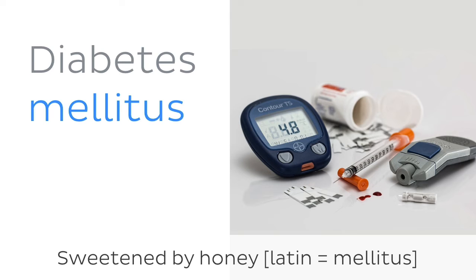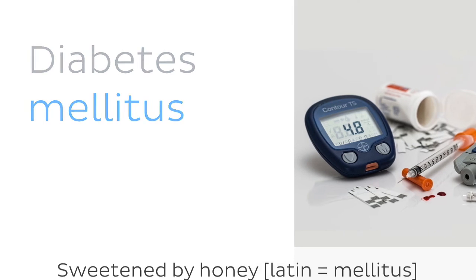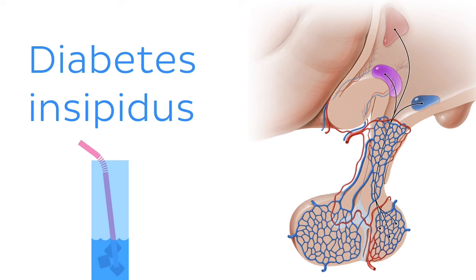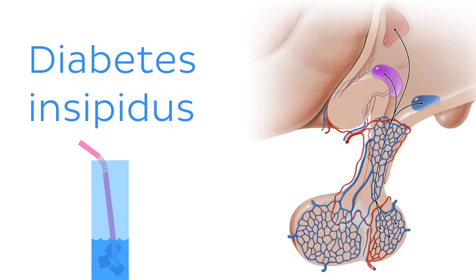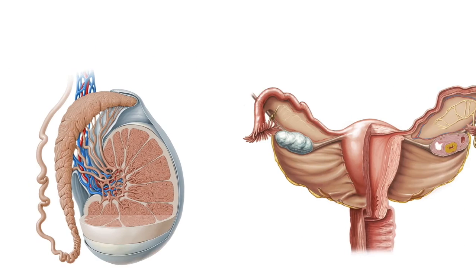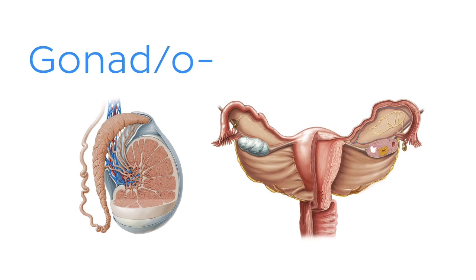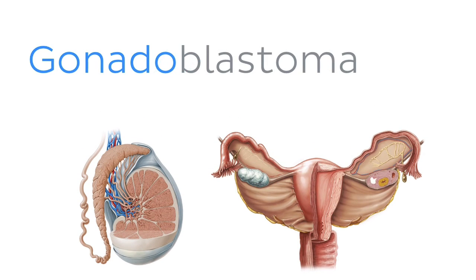But did you know that not all types of diabetes are related to blood sugar? For example, diabetes insipidus refers to a disorder of fluid imbalance, excessive urination and thirst caused by abnormalities in the pituitary gland. To finish our roundup of endocrine organs, let's briefly discuss some terminology of the gonads — the testes in males and the ovaries in females. The root here is unsurprisingly gonad or gonado, and you'll see it in terms like gonadoblastoma, which refers to a benign tumor made up of gonadal elements.